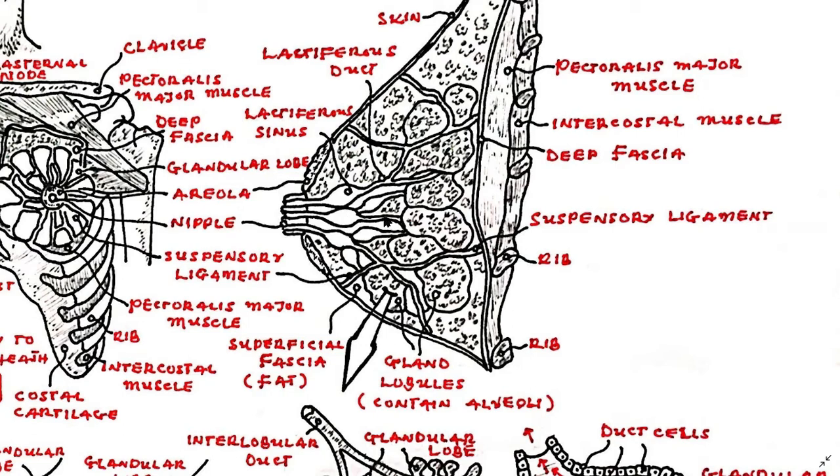The nipple consists of pigmented skin with some smooth muscle fibers set in fibrous tissue. Erection of the nipple may enhance flow of milk through the ducts. The circular areola is highly pigmented more than the surrounding skin. It contains sebaceous glands that may act as a skin lubricant during periods of nursing a baby.